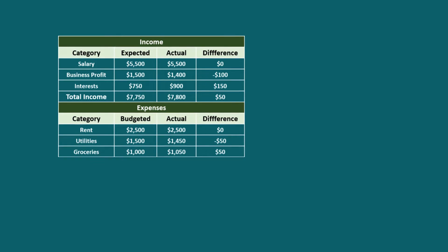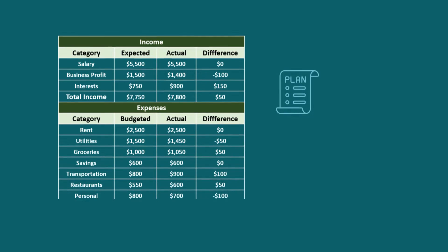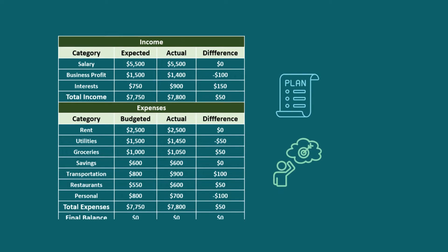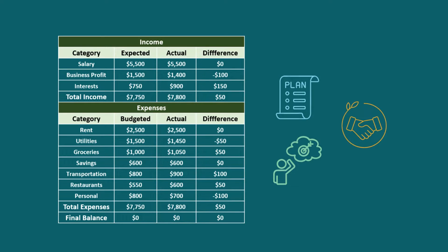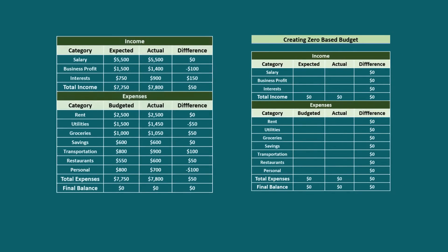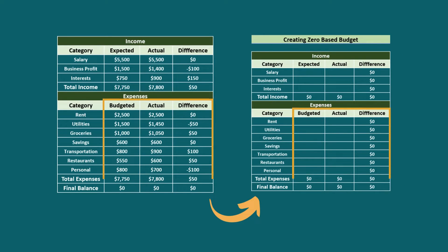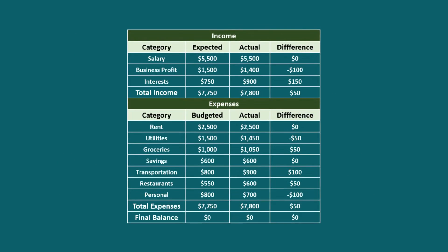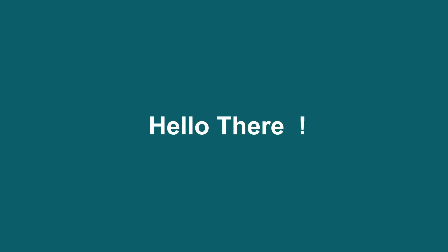A precise income and expense plan with expected source and sector respectively sounds ideal to all. What if you get to change and decide a specific amount to every expense category so that the end balance remains zero?